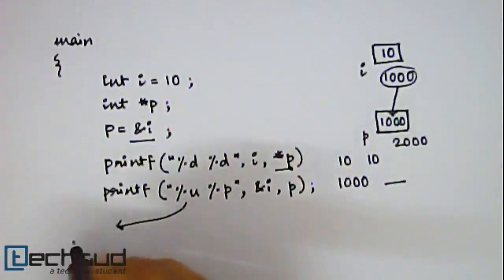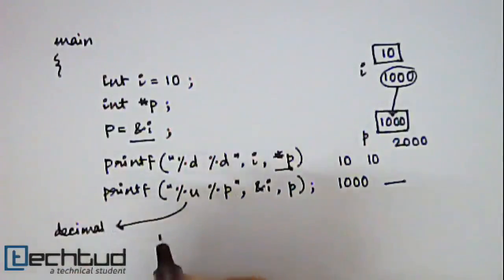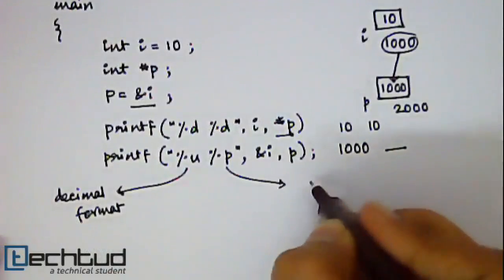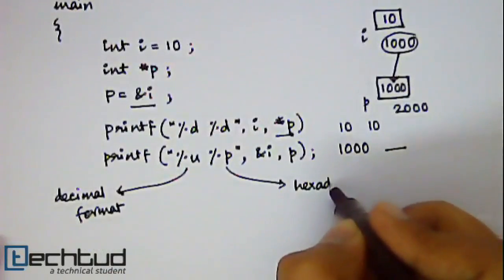So it will give you the address in decimal format. And this will give you the address in hexadecimal format.